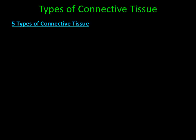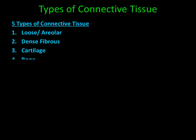There are five types of connective tissue, and the type of connective tissue is determined by the composition of its extracellular matrix. The first type is called loose areolar connective tissue. The second is dense fibrous connective tissue. The third is cartilage. The fourth is bone. And the last connective tissue is blood.